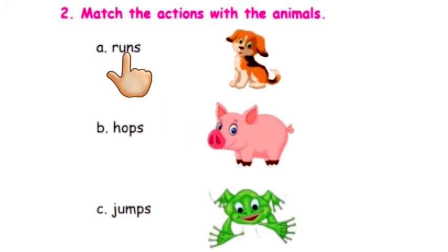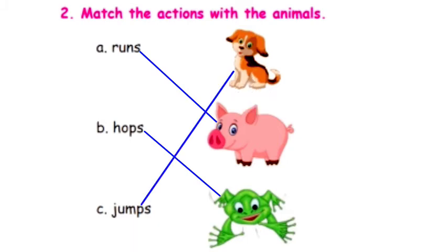Runs. The pig runs. We have to draw the line and match. Very good. Second one. Hops. Frog hops. Next one. Jumps. The pup jumps. Very good children.